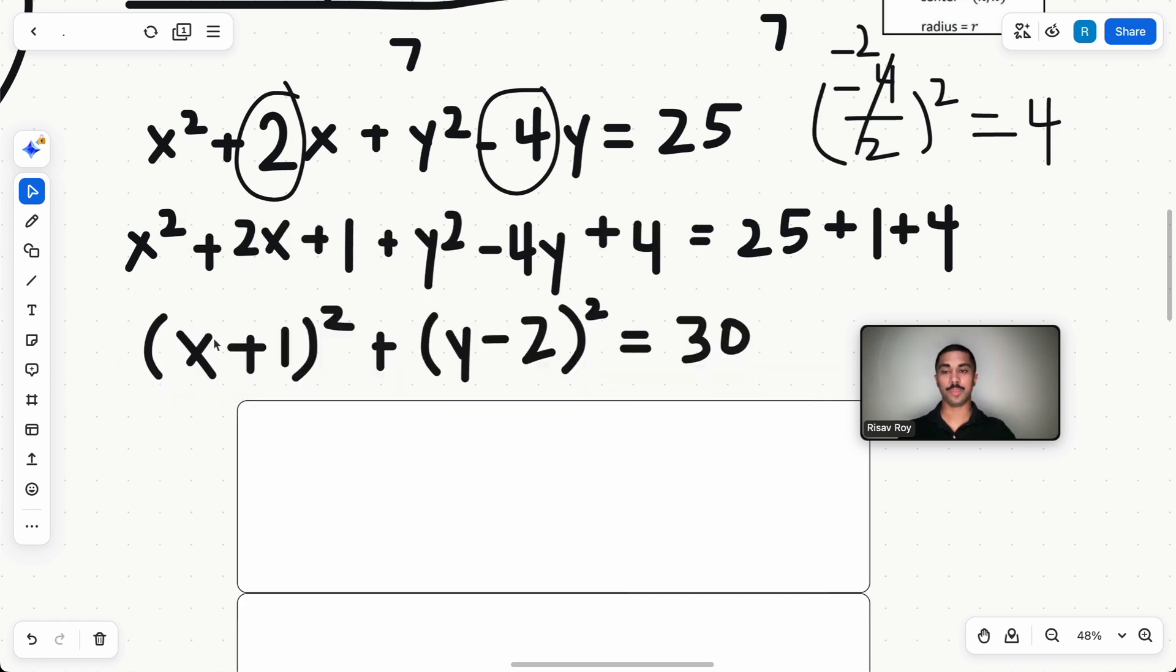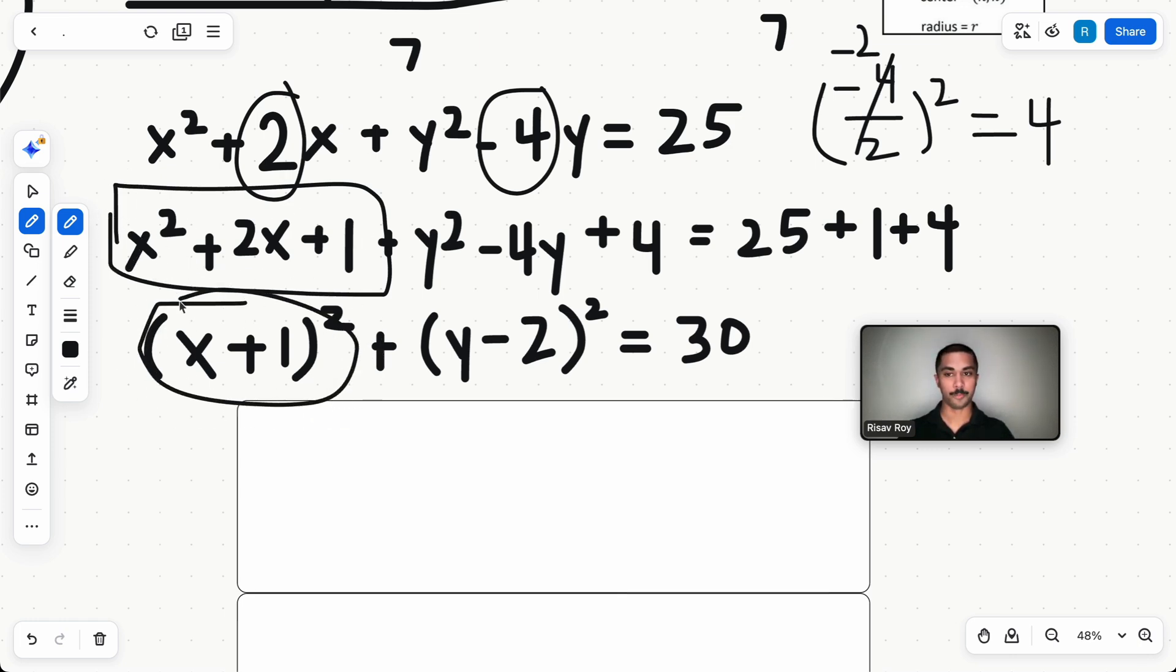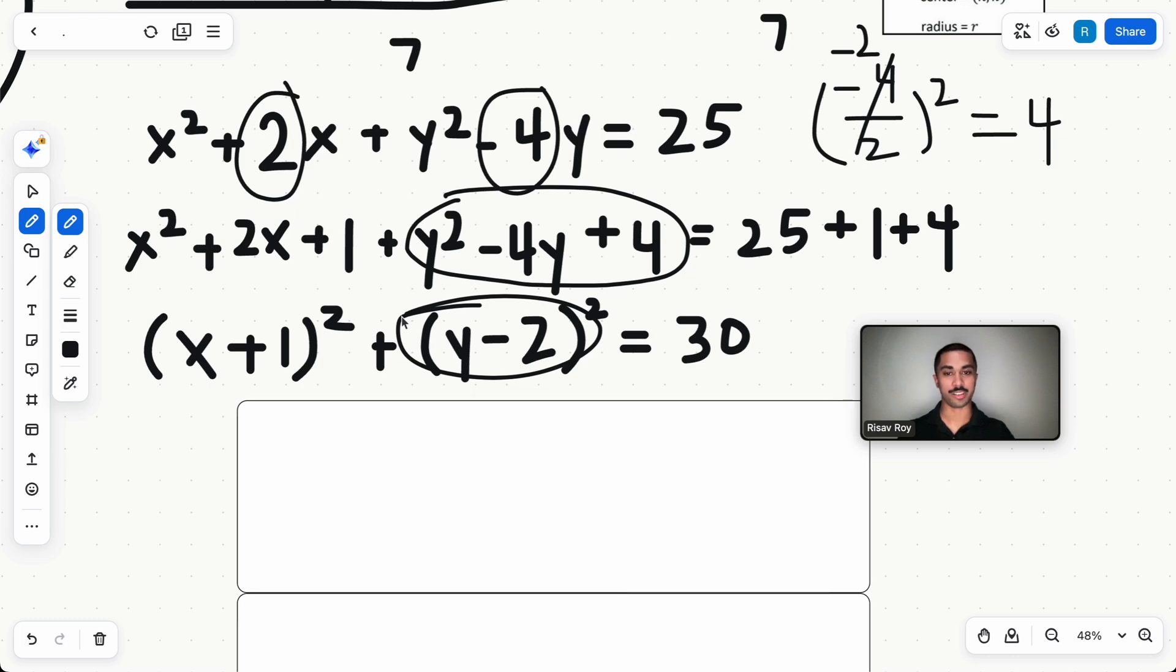So why did we do that? Well, we want to add whatever we found right here by taking these b values, dividing by two, and squaring them. We want to add it to both sides of the equation. Why do we want to do that? Because then this will give us this form. Hopefully, you can recognize if you have just this part, x² + 2x + 1. This is a perfect square, (x + 1)².